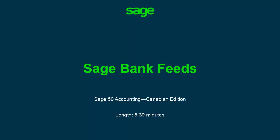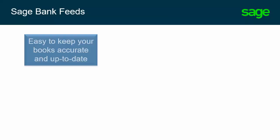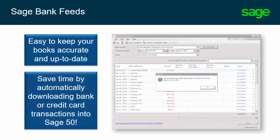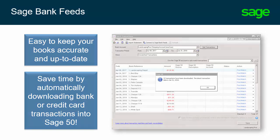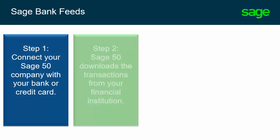Over the next few minutes, we will explain what Sage Bank Feeds are and show you how they work. Sage Bank Feeds make it easy to keep your books accurate and up-to-date. You can save time by automatically downloading bank or credit card transactions into Sage 50. After connecting your Sage 50 company with your bank or credit card, Sage 50 downloads the transactions from your financial institution.